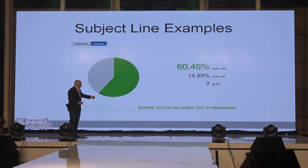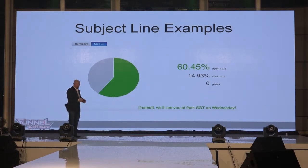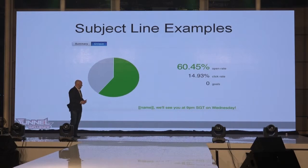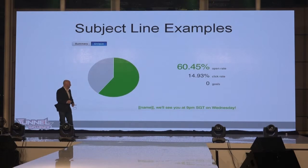The next trick is at the start of the subject line it says 'name' in brackets. One of the tricks I'm going to show you is how to actually insert their name into a subject line to make it really personal. So if I signed up to this list with the name Brian, it would say, 'Brian, we'll see you at 9pm Singapore time on Wednesday.' Just by using the name in the very first word of that subject line, I've got a really high open rate on that email.